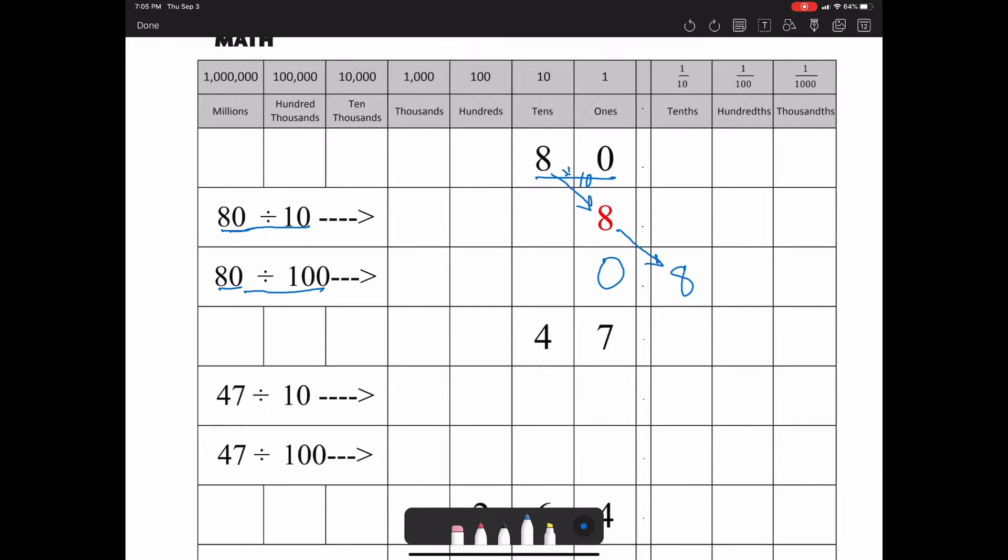47 divided by 10 - the 4 is in the tens place. Think about this: if we split up 47 into 40 and 7, then 40 divided by 10 would be 4, so the 4 moves over one space. Likewise, if we took 7 ones and divided it by 10, we'd get 7 tenths. So both of them shift.